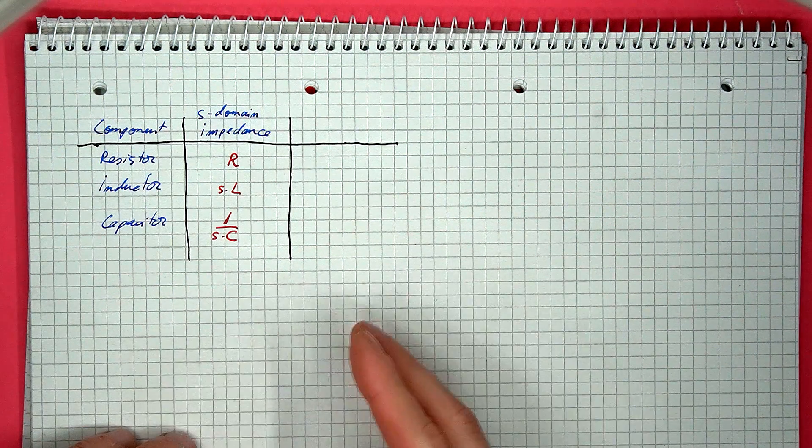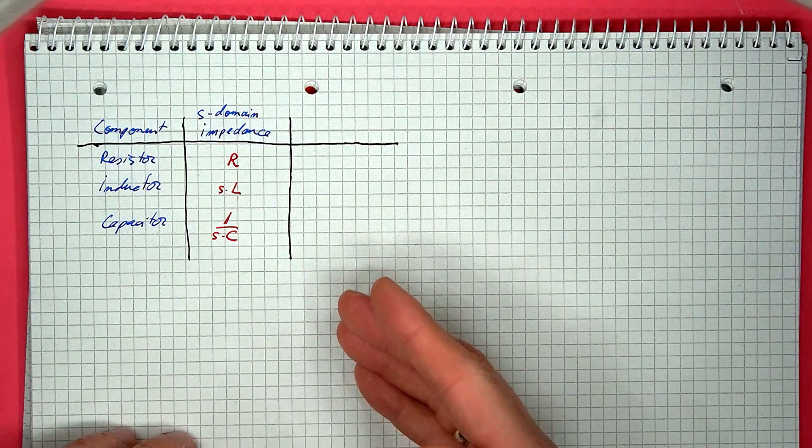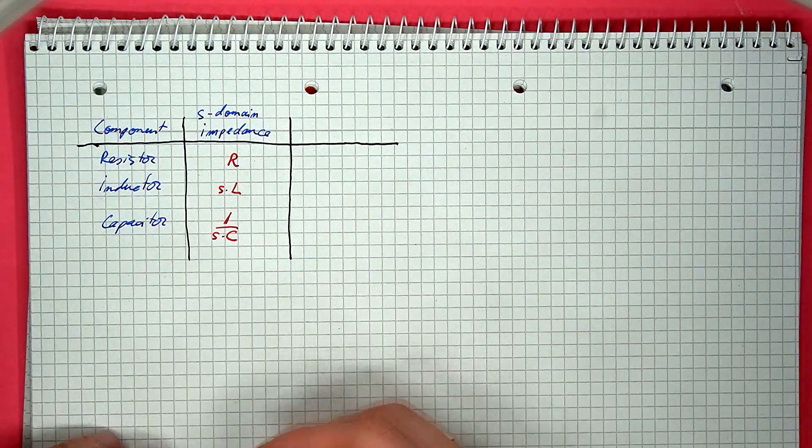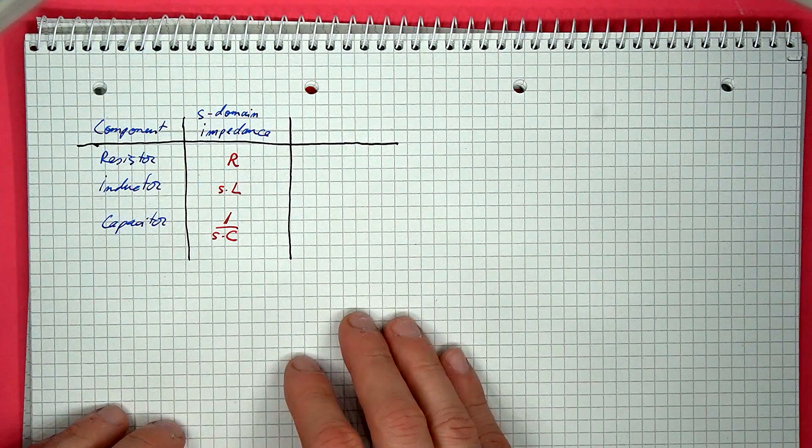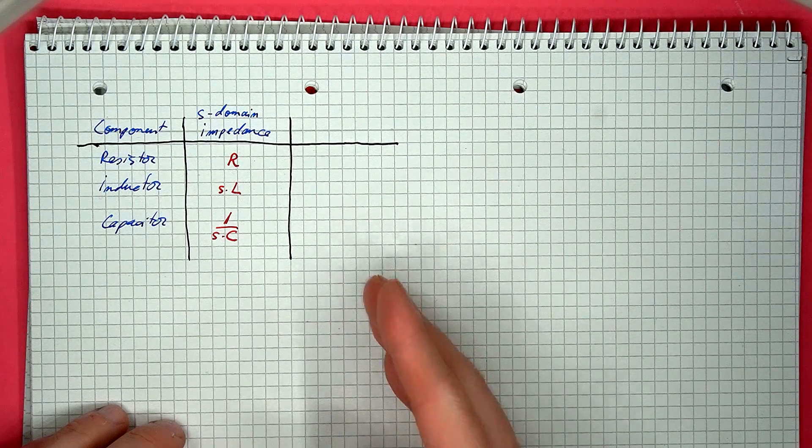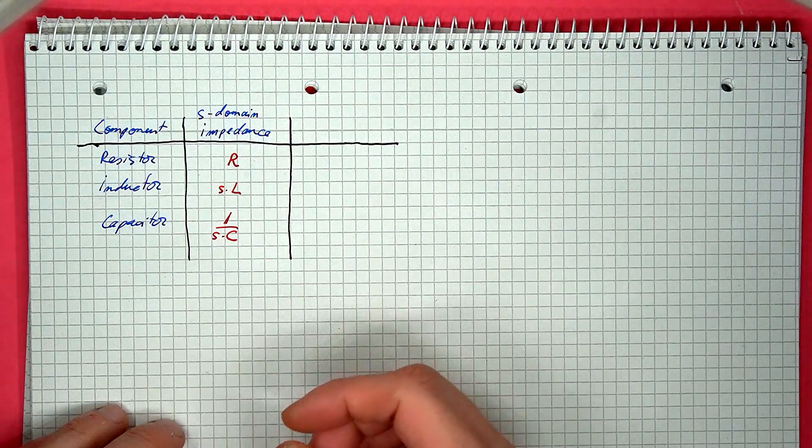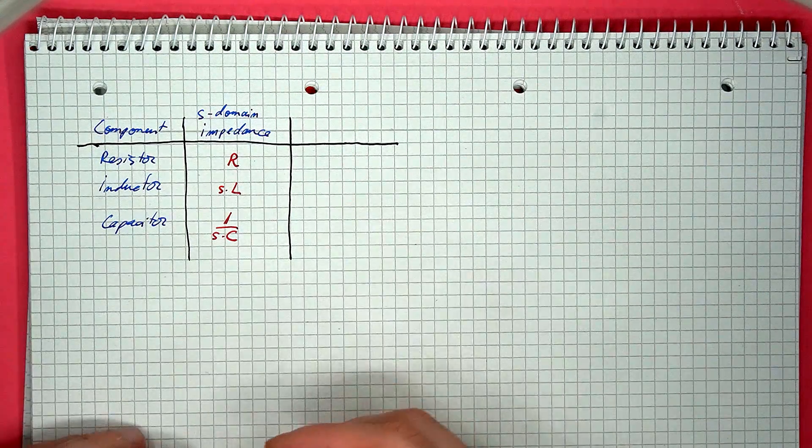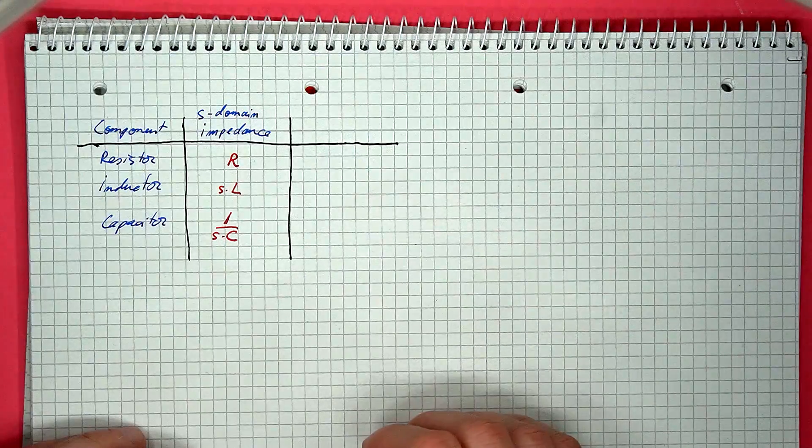Without going into the details of the mathematics, the s-domain equivalent impedances for a resistor, inductor, and capacitor are the following. You'll just have to trust me on this. All of these expressions contain the component's value, the resistance, inductance, and capacitance, and s. Well, except of course for the resistor, where the impedance is independent of frequency.